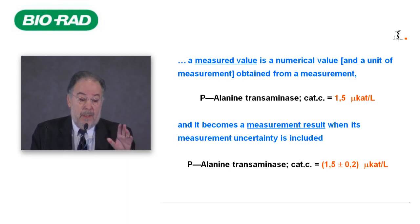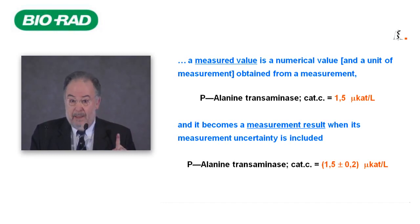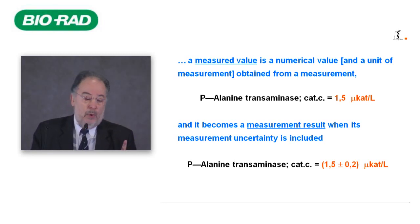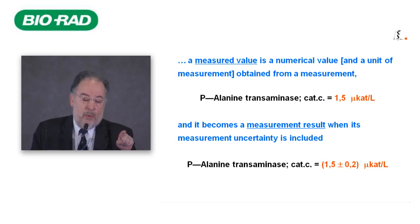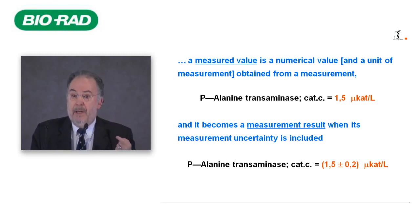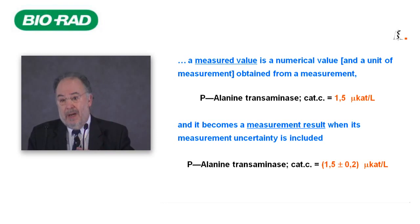For example, 1.5 microkatal per liter is a measured value, not a result. To become a result, it is necessary to add the uncertainty of measurement. In the second example, this is a real result because there is the measured value 1.5 and the uncertainty — in this case, an expanded uncertainty.